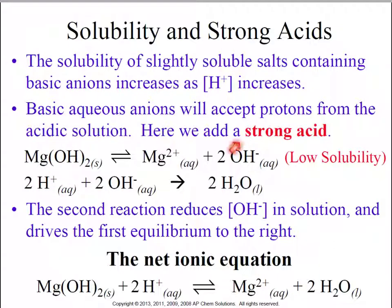those H pluses are going to join with the OH minuses from the Mg(OH)2, forming water. What essentially we're doing then is we are erasing some of these hydroxides. What does Le Chatelier say about a stress like that? If we remove hydroxides, what's the system going to do?